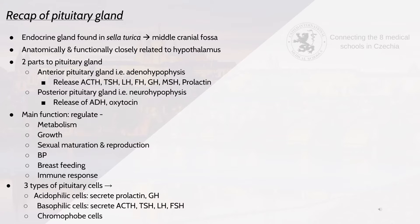The three types of pituitary cells are the acidophilic cells, which secrete prolactin and GH; basophilic cells, which secrete ACTH, TSH, LH and FSH; and finally chromophobe cells.